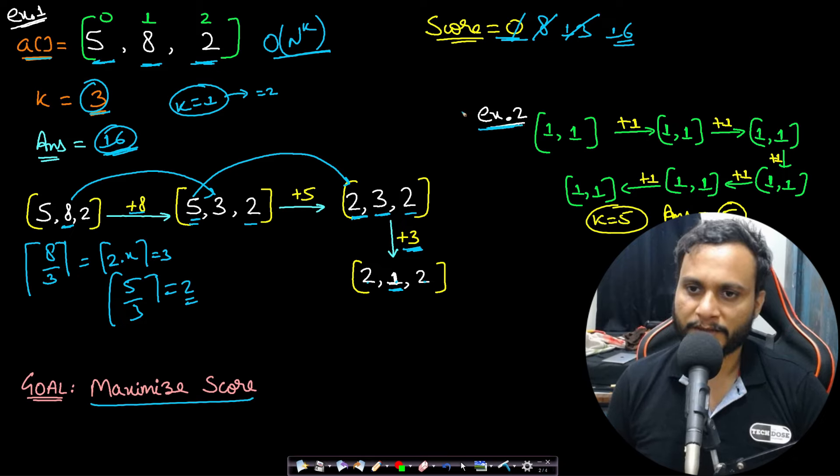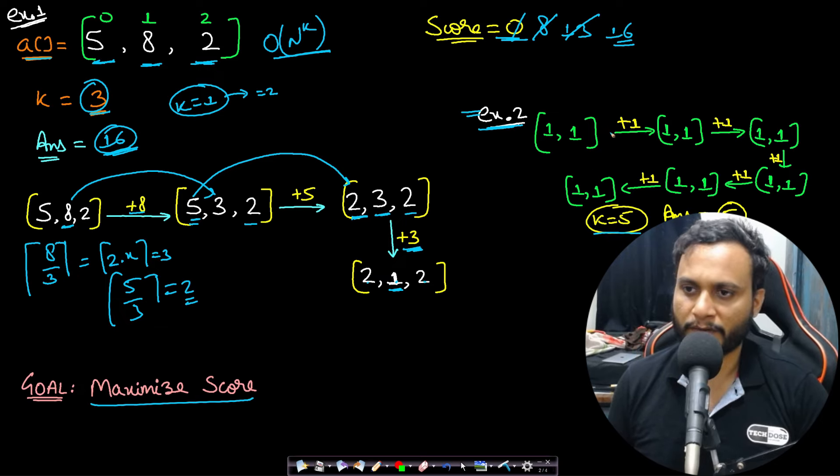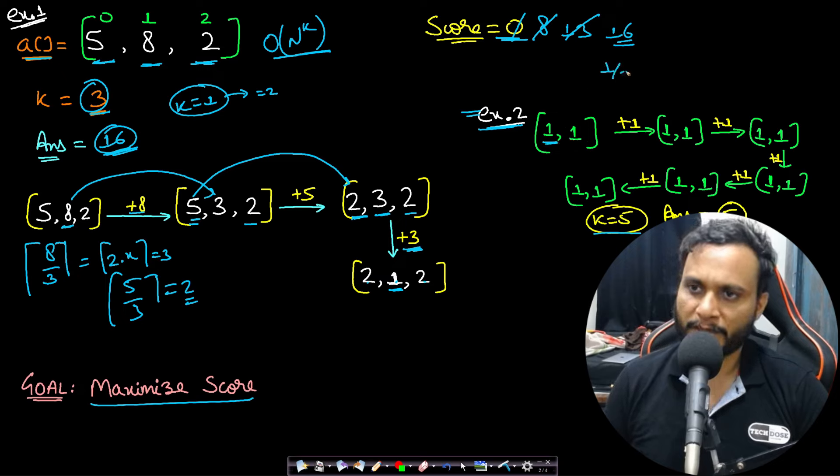Let's look at another example. Example 2 has k value 5 and we have just two elements [1,1]. In this case you can pick whichever element you want. When we pick this 1, then 1 by 3 and taking the ceiling of it will be 1.